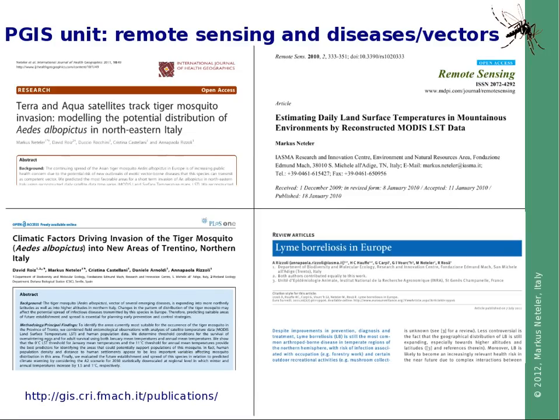The GIS and Remote Sensing Unit is working on new methods in remote sensing and disease vector modeling. An overview of recent publications includes work related to Aedes albopictus, one dedicated to the reconstruction of MODIS land surface temperature data, and a third about Lyme Borreliosis in Europe. This illustrates the application of reconstructed US satellite data, but further public geodata are also available.